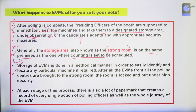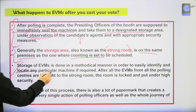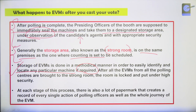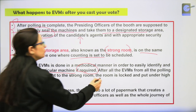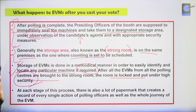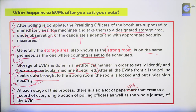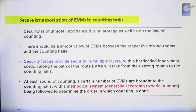The storage of EVMs is done in a methodical manner with proper serial numbers so that any machine from any constituency or polling booth can be easily identified. After all the EVMs from polling centers come to the strong room, it is locked in high security. After all stages of this process, there is a lot of paperwork that creates a record of every action of a polling officer — the whole journey of EVM is recorded.